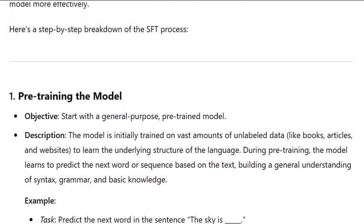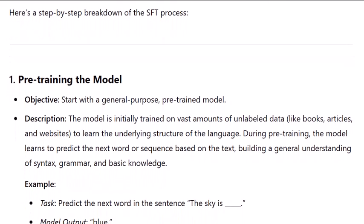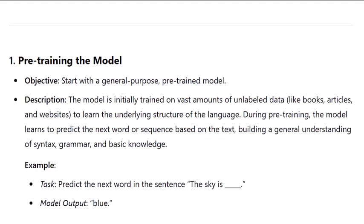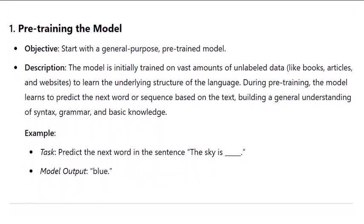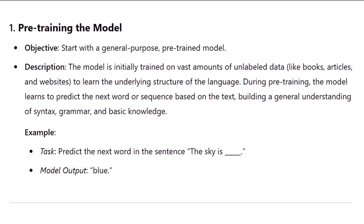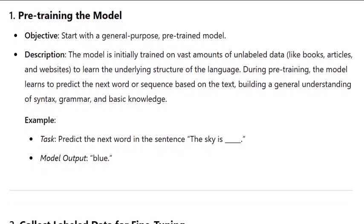Here's a step-by-step breakdown of the SFT process. Step one: pre-training the model. Objective: start with a general-purpose pre-trained model. The model is initially trained on vast amounts of unlabeled data, like books, articles, and websites, to learn the underlying structure of the language. During pre-training, the model learns to predict the next word or sequence based on the text, building a general understanding of syntax, grammar, and basic knowledge.